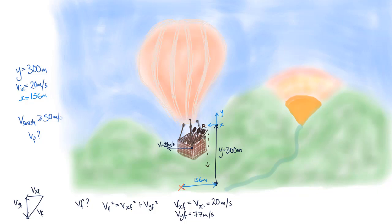We can now sum our velocities using a vector diagram. We find that the final velocity is equal to the square root of the vertical velocity squared plus the horizontal velocity squared. Plugging in our numbers, we get a final velocity of 80 meters per second.